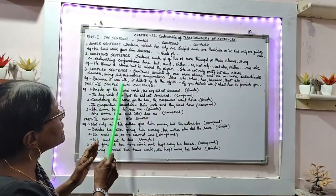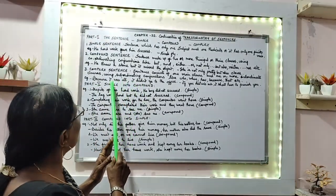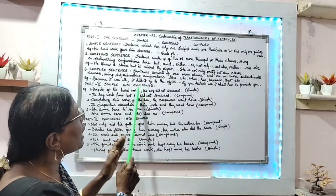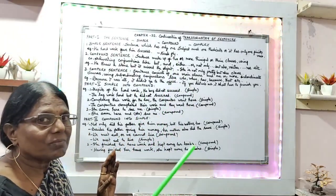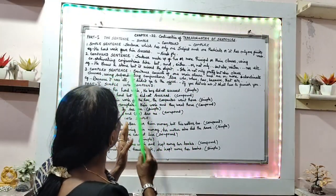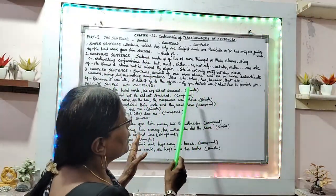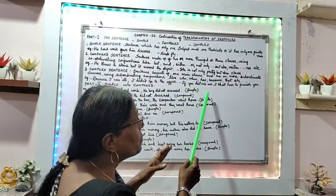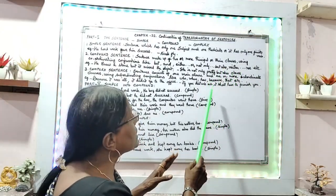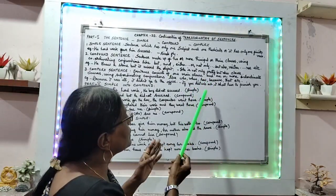Example of a complex sentence: 'Because I was ill, I did not go to the office.' That is an example of a complex sentence — it tells the reason. Another example: 'If you disturb me, I shall have to punish you.' Here 'if you disturb me' tells about the condition.